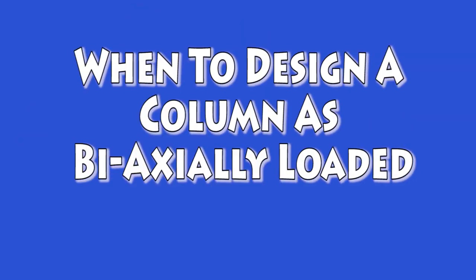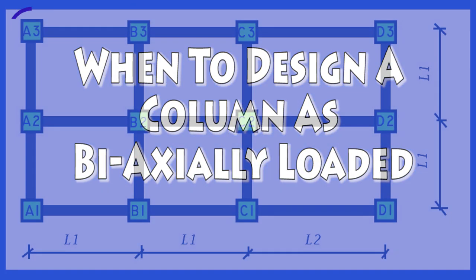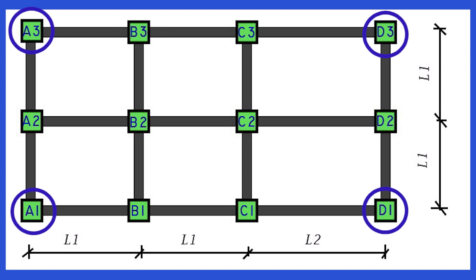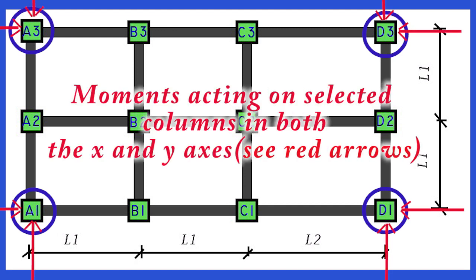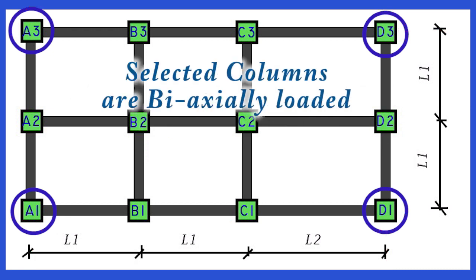When to design a column as biaxially loaded. Columns A1, A3, D1, and D3 support an arrangement of beams that is clearly unbalanced in both of its axes, and as such should be designed to resist an axial load and biaxial bending.